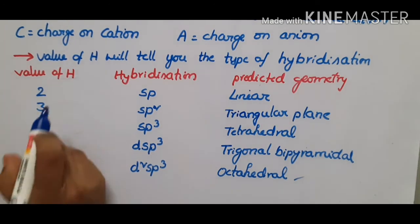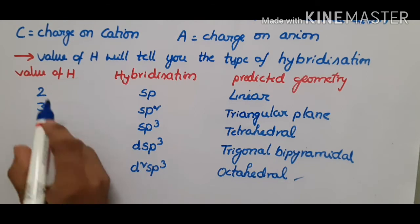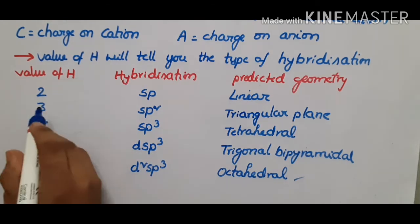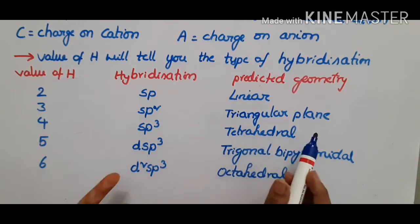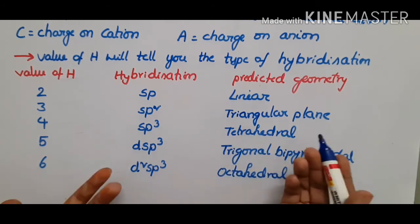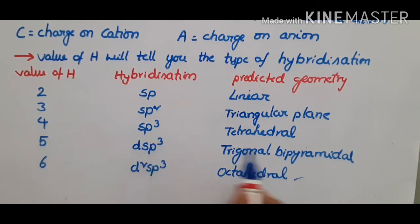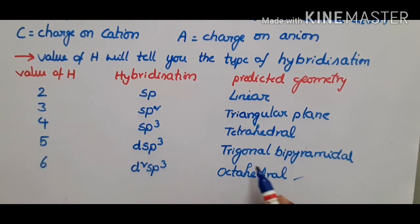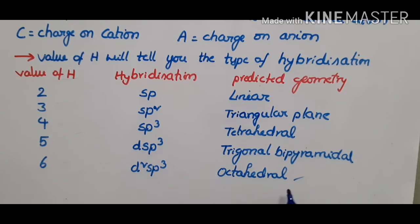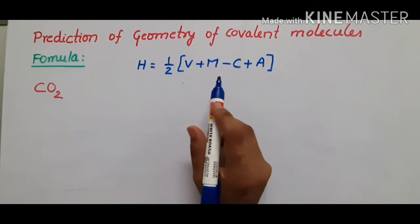If the value of H equals 2, hybridization will be sp and the predicted geometry will be linear. If H equals 3, hybridization is sp2 and the geometry will be triangular planar. If H equals 4, hybridization is sp3 and the geometry is tetrahedral. If H equals 5, hybridization is dsp3 and the geometry is trigonal bipyramidal. If H equals 6, hybridization is d2sp3 and the geometry is octahedral.